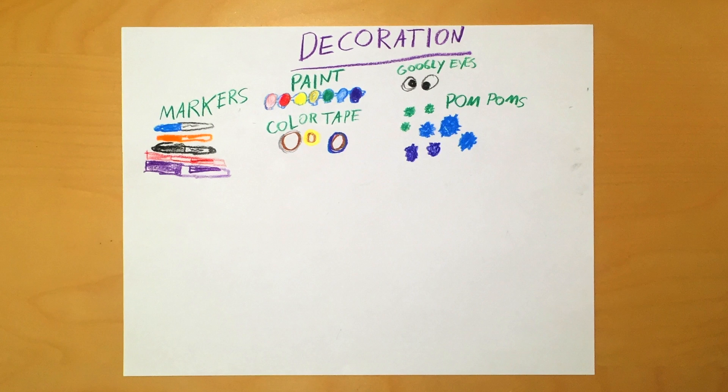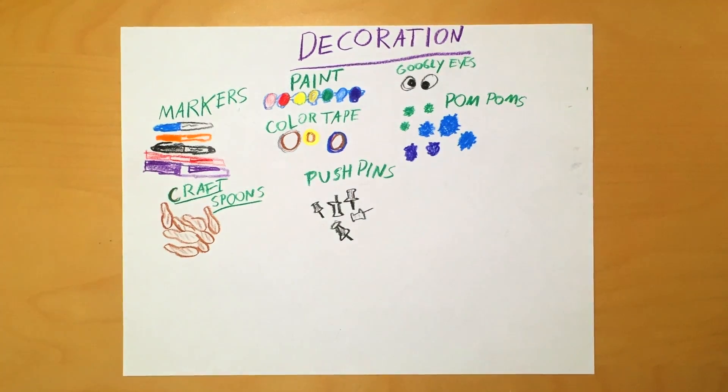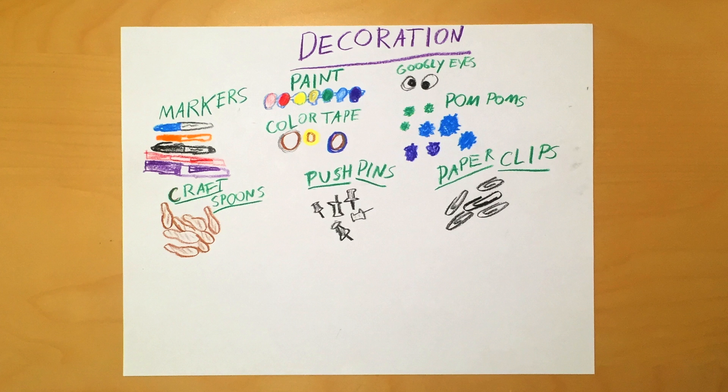Here are some good materials that you can use for the legs of the Jitterbot. You can grab some craft spoons, push pins, or paper clips. Again, these are just suggestions. Use whatever you think would work well or make for an interesting project.